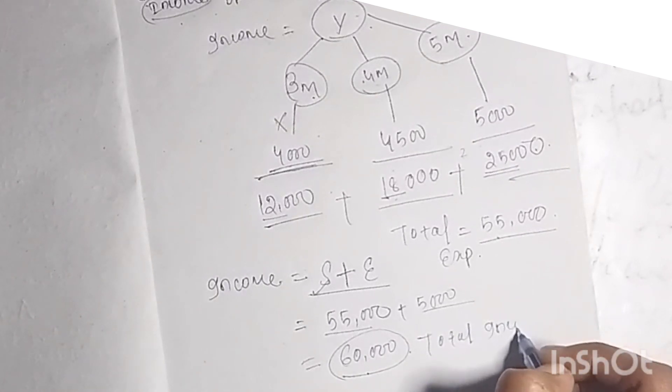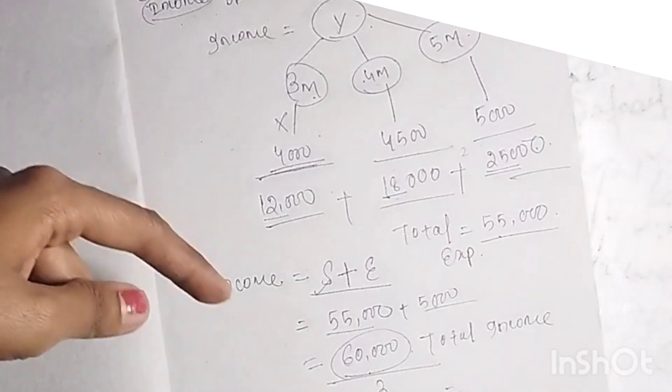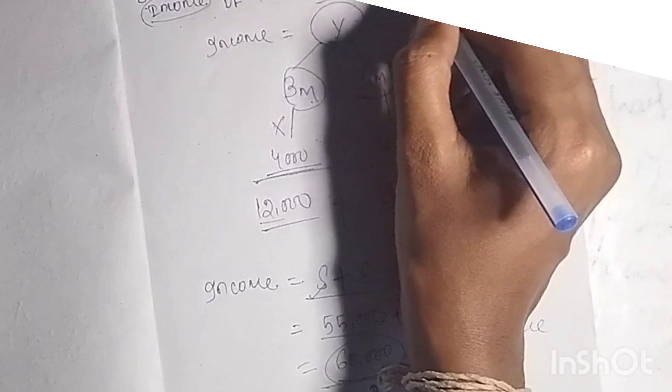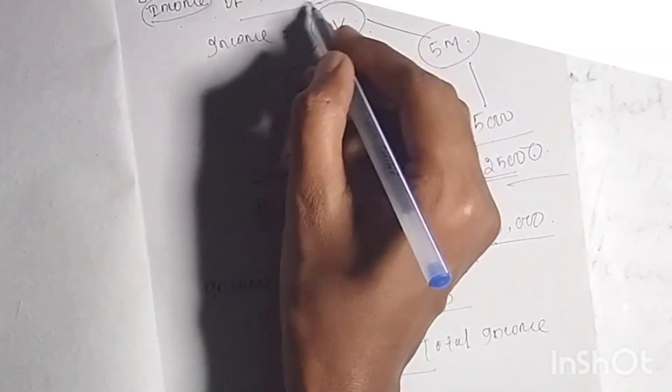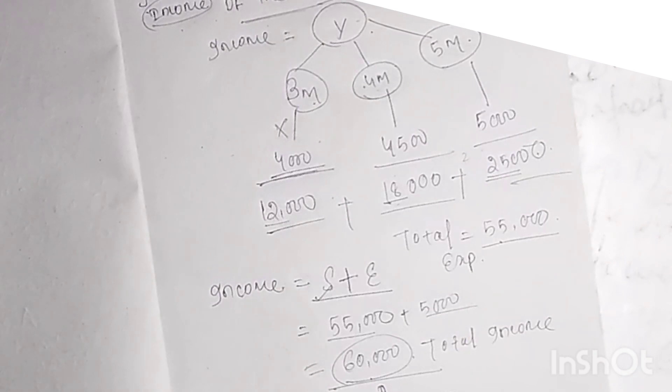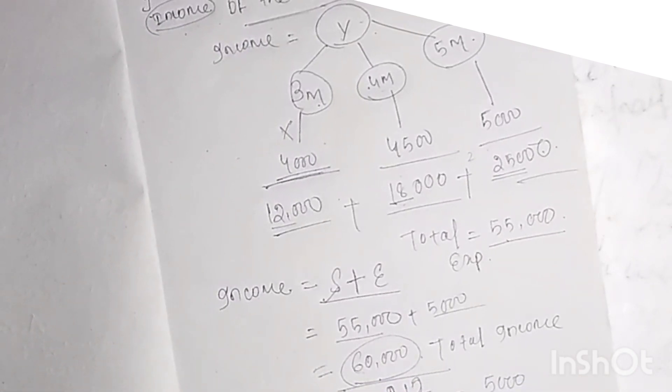The question asks to find the average monthly income. How to find the average? One year equals 12 months, so we divide 60,000 by 12, which would be 5,000.